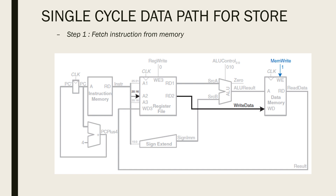That second register is specified in your RT field. RT field is your destination. That address is loaded into your A2 port, and these bits are connected to your register read A2 port, which reads the register value to your RD2 port. So this RD2 port is connected to your write data port of your data memory. You can see that the write enable port of your data memory is controlled by a memwrite signal, whose possible values are 1 and 0. When the value is 1, it actually writes data to your memory.